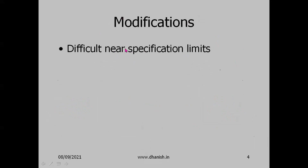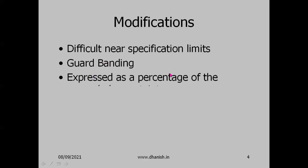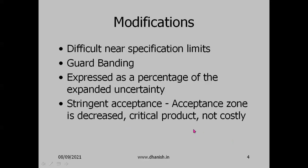Modifications were suggested because near the specification limits, there is a possibility that a bad product will be accepted or a good product will be rejected. Which is more dangerous depends on the nature and criticality of the product. This led to the concept of guard banding — the guard band is expressed as a percentage of the expanded uncertainty U, and the acceptance zone is modified accordingly.